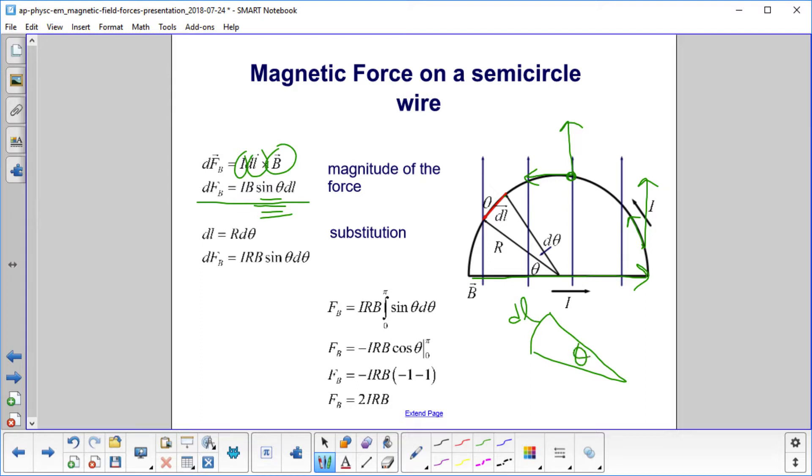Here's theta. And here's R. It's kind of our radian definition, isn't it? So DL is equal to R d theta. And I'm sorry, I should have put a D here. That's for that particular angle. So now I have the force on any little piece DL is IRB sine theta d theta.